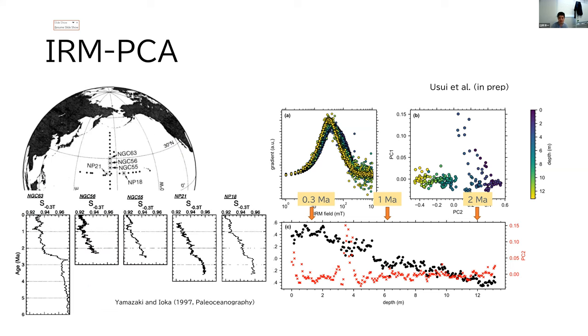Actually, this pattern is consistent with classical work by Yamazaki and Ioka reporting increasing coercivity from around two million years ago, at that time inferred from S ratios.